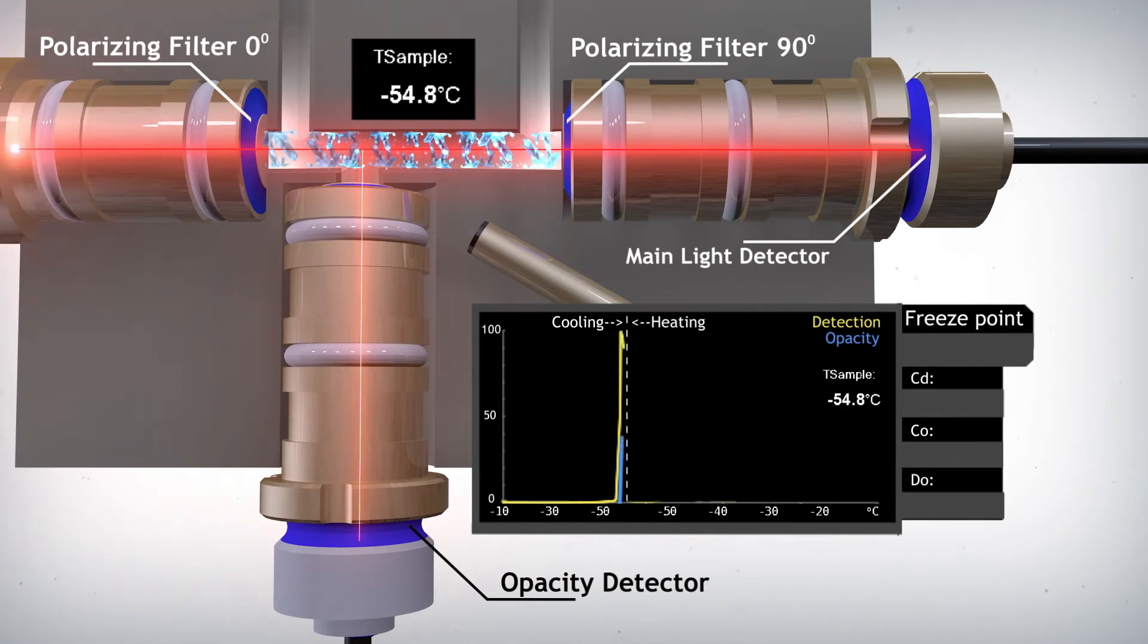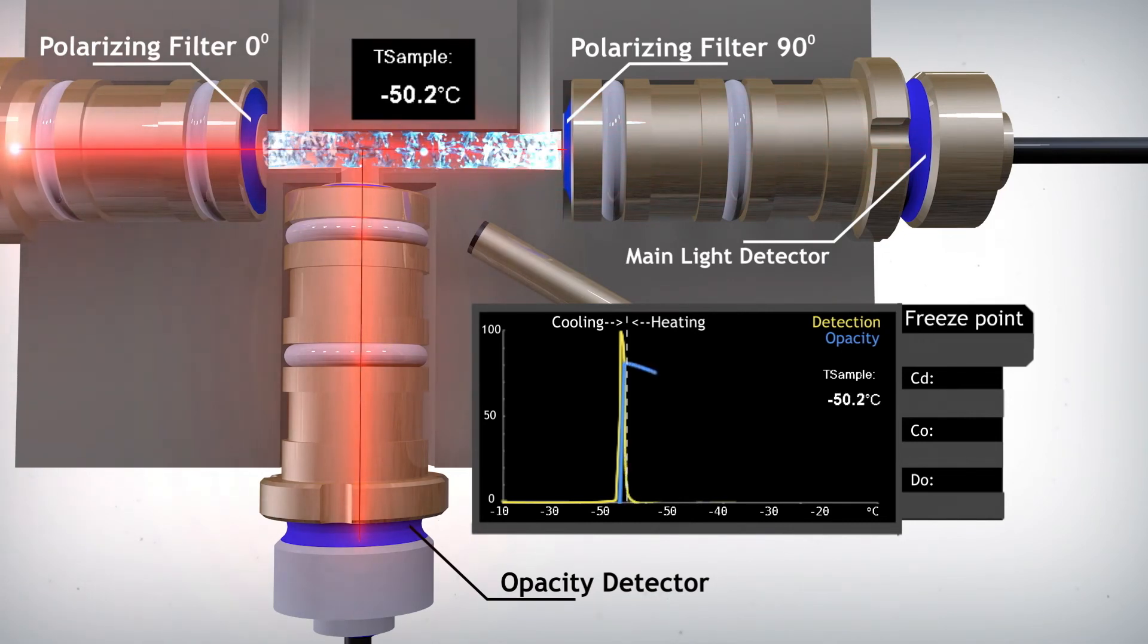When the crystal formation becomes too thick to allow light to penetrate through the sample and the main detector signal stops, OPTI-FZP goes from cooling to heating at 3 degrees per minute, as required per the method. As the hydrocarbon crystals melt away, the light scattered by the remaining crystals allow light back through the second polarization filter, creating a detectable signal again.